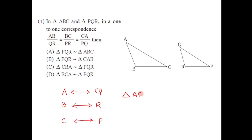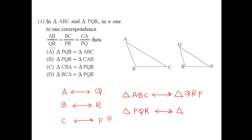So if we write triangle ABC, the corresponding vertices give us Q, R and P for the other triangle. In other words, for triangle PQR: the corresponding vertex of P is C, Q is A, and R is B. So triangle PQR corresponds to triangle CAB, which is option B. Therefore option B — triangle PQR is similar to triangle CAB — is the correct alternative.